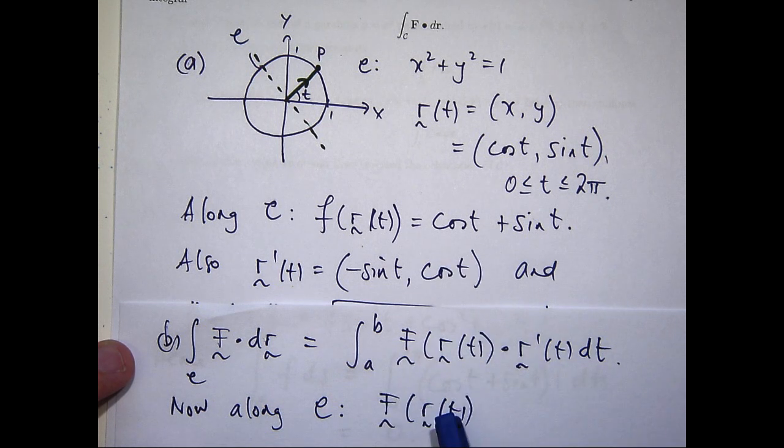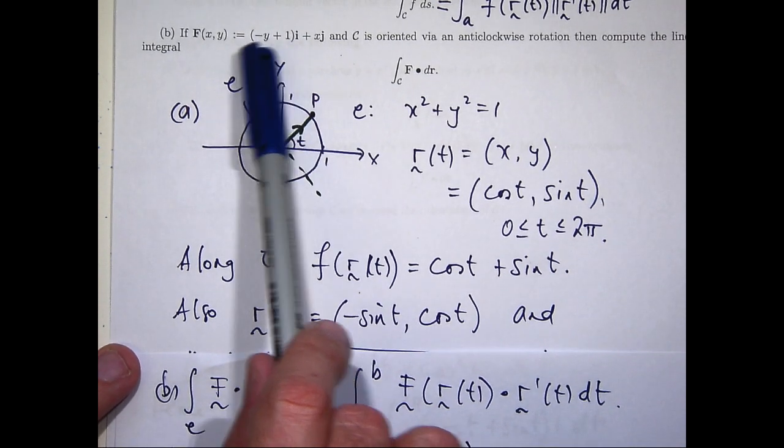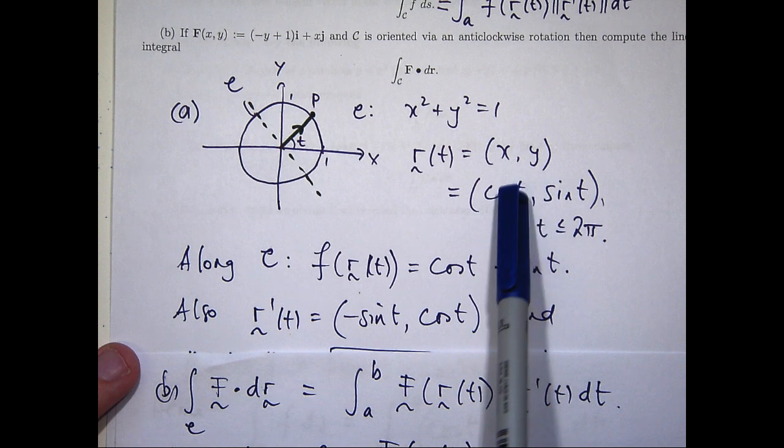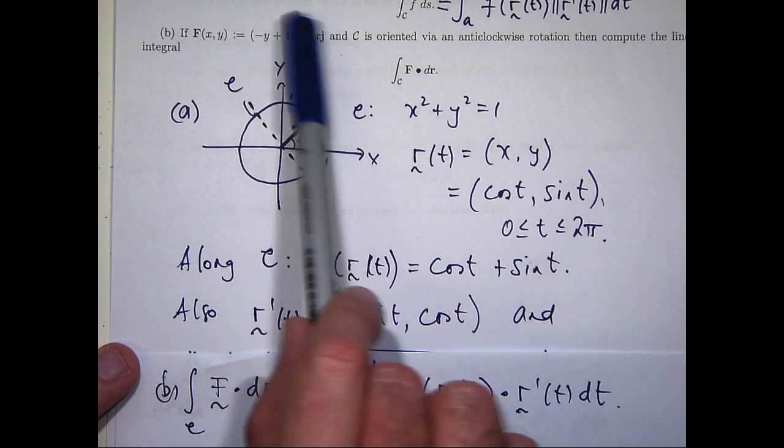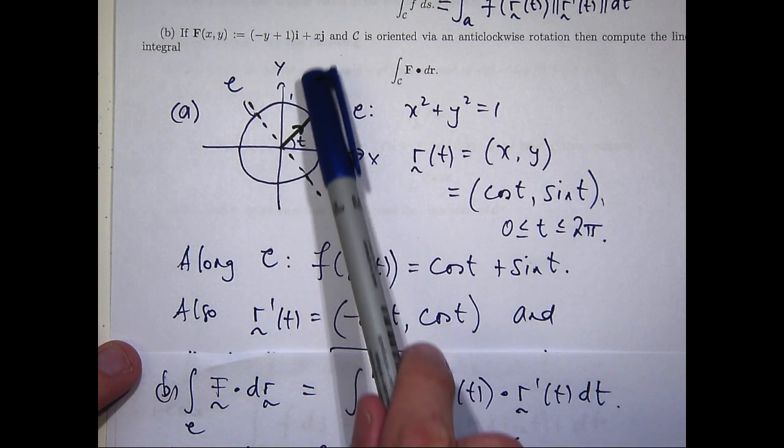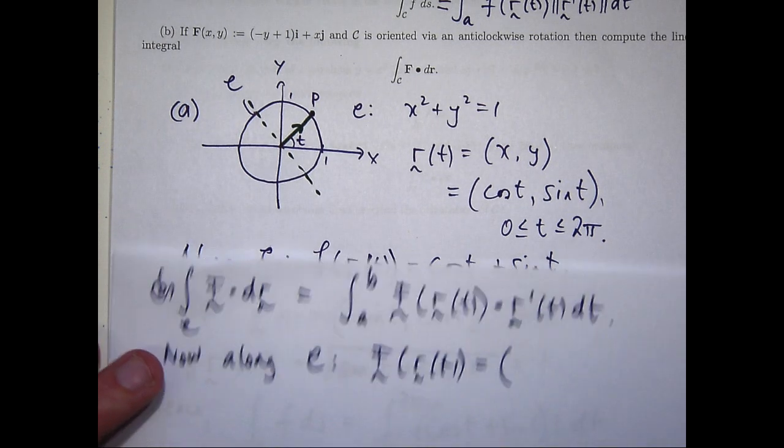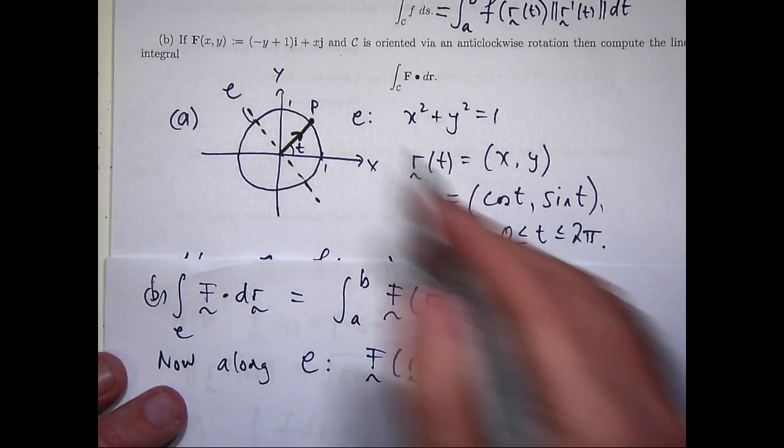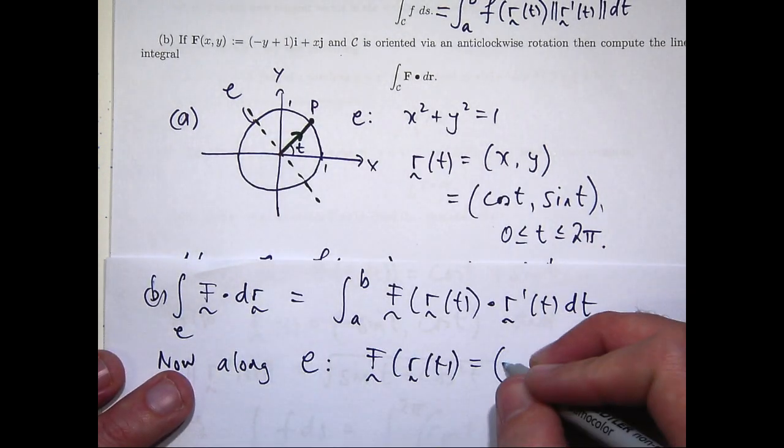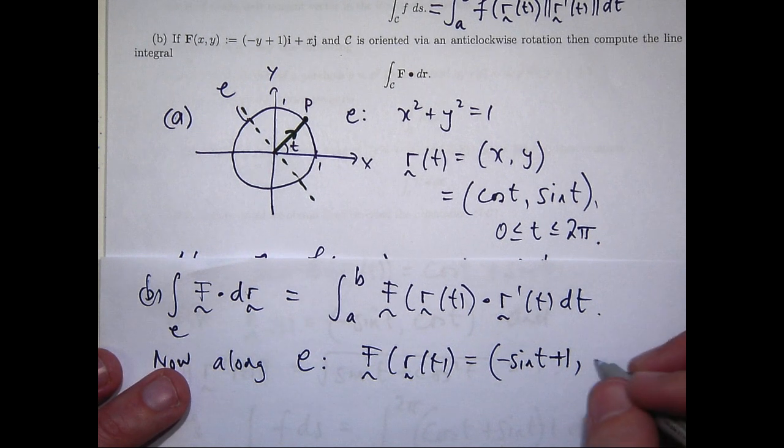Okay. So, f along r of t, here's my f. So, I replace x with cosine t, y with sine t in here. Okay. Now, up here I've written i's and j's. I'm just going to write it as an ordered double here just to save a little bit of space. So, I'm going to have minus sine t plus 1 comma cosine t.